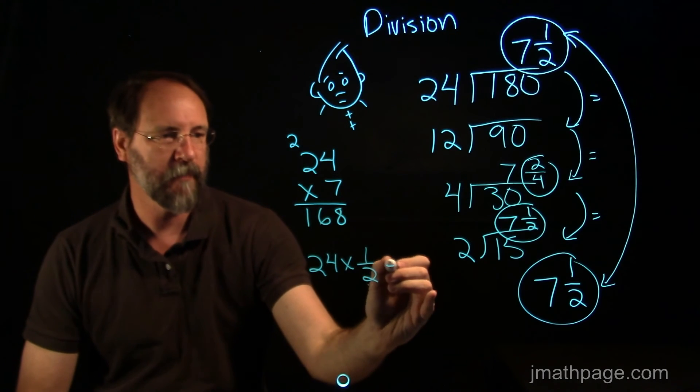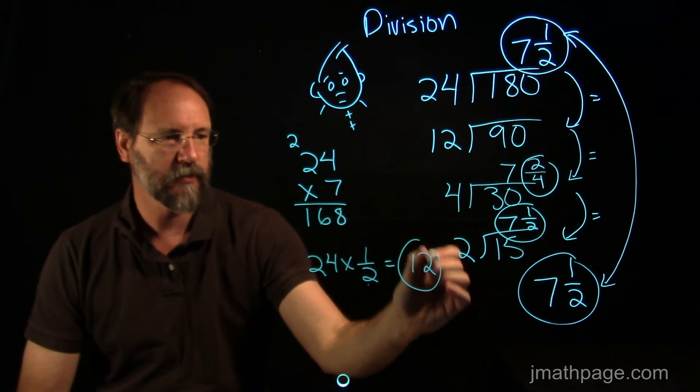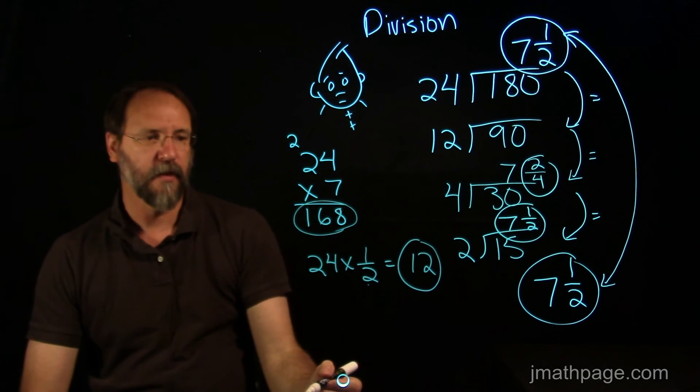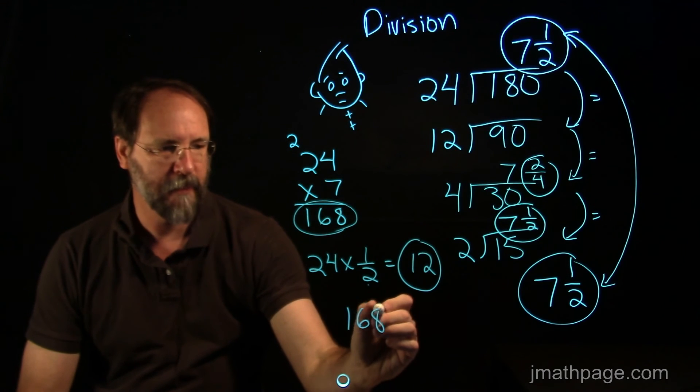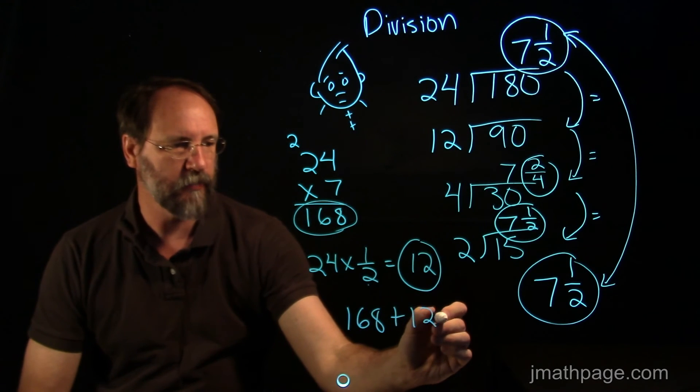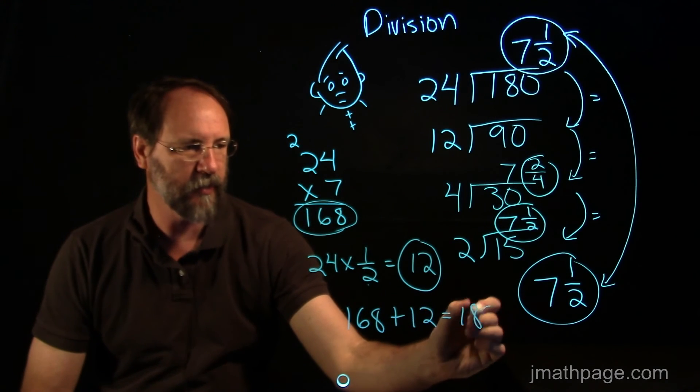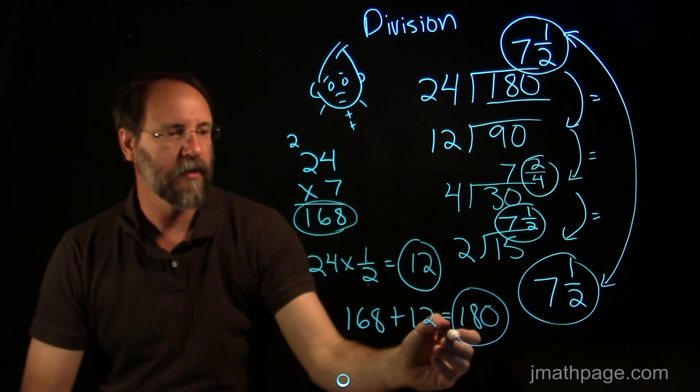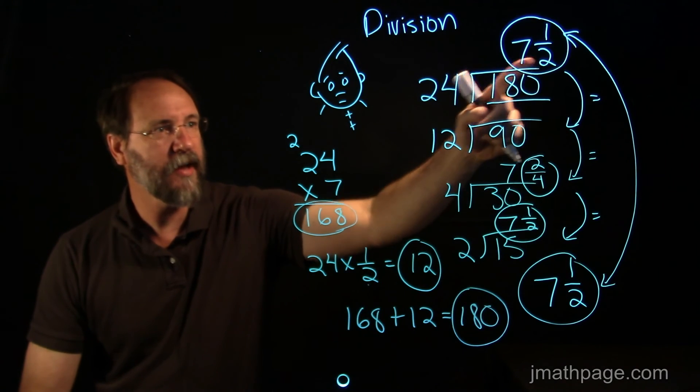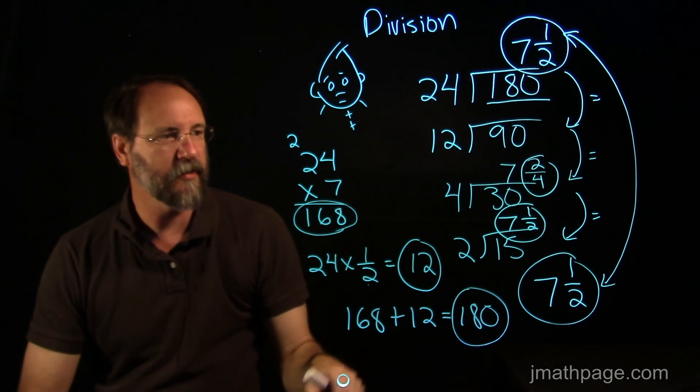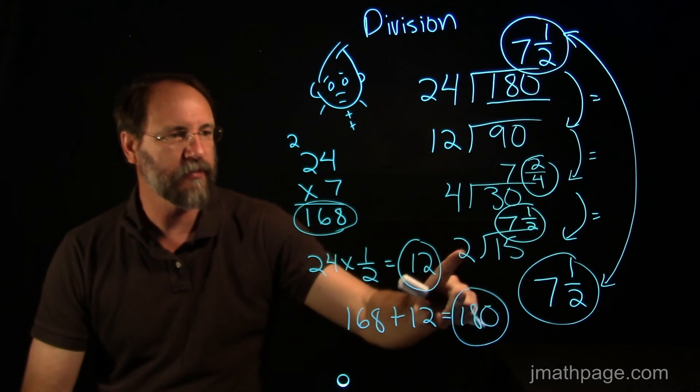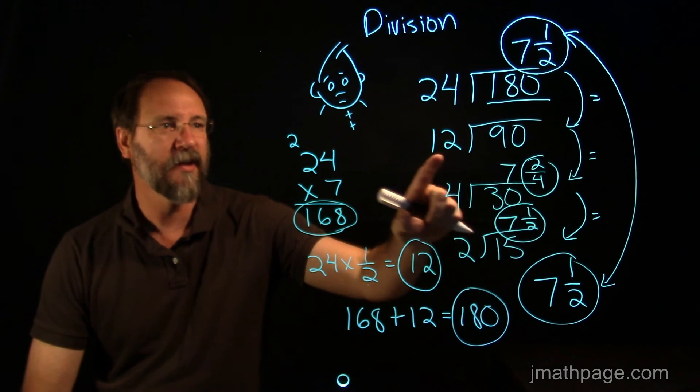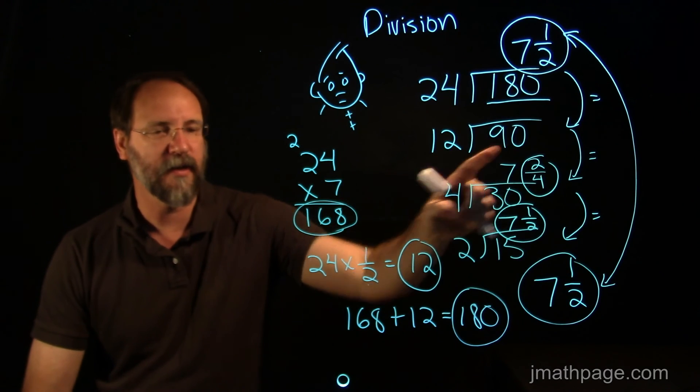Now, a half of 24 is 12. So I've got 12 here and 168 there. Now, if I take my 168 and I add it to my 12, I get 180, which is the same as this. So I'm saying that 7 and a half 24s make 180 in the same way that 7 and a half 2s make 15, which means that 7 and a half 4s make 30 and 7 and a half 12s make 90.